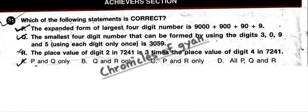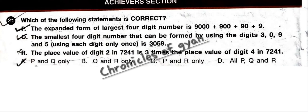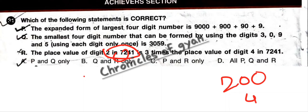Achiever Section. Question 31: Which of the following statements is correct? The expanded form of the largest 4-digit number 9999 — when you add all expanded parts, you get 9999, so this statement is correct. The smallest 4-digit number formed using digits 3, 0, 9, 5 (each only once) is 3059 — this statement is also correct. The place value of digit 2 in 2,41 is 200, and the place value of digit 4 is 40; 3 times 40 is 120, not 200, so that statement is incorrect. Therefore P and Q are correct.